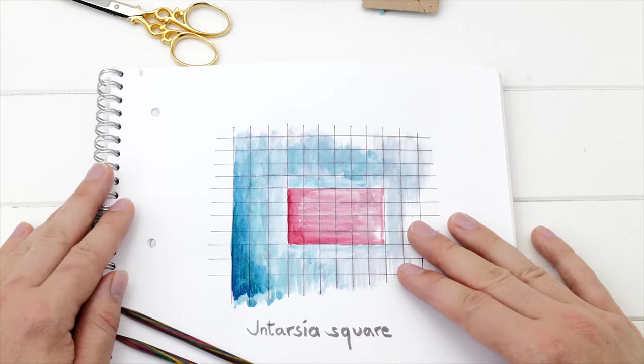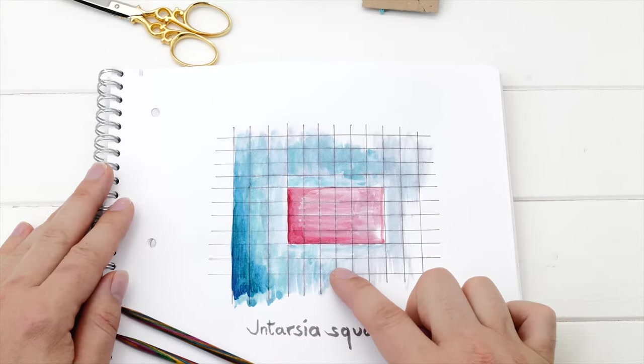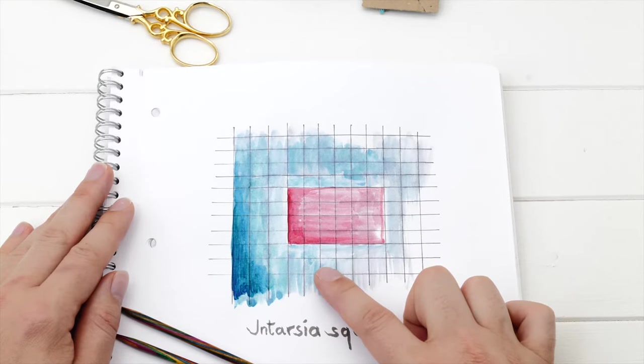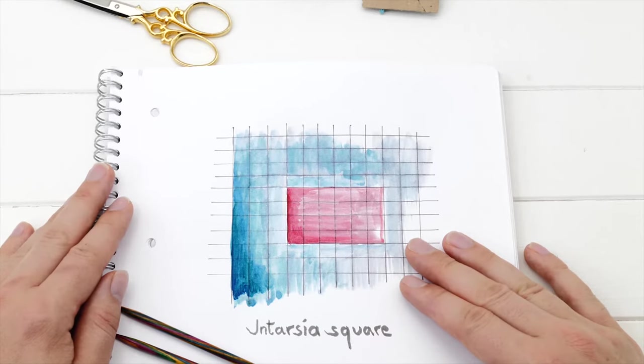The starting point of all intarsia projects is a chart where each little box represents a stitch. A knit stitch on the right side and a purl stitch on the wrong side. And before you can start knitting, you need to figure out how many bobbins you will need.